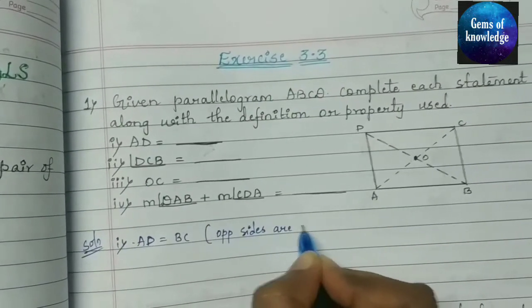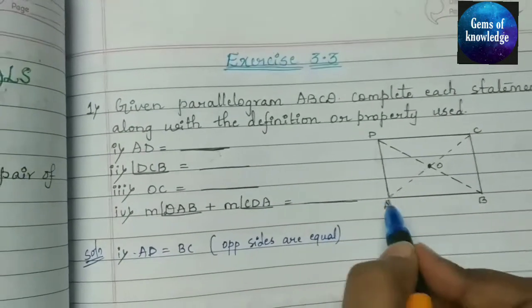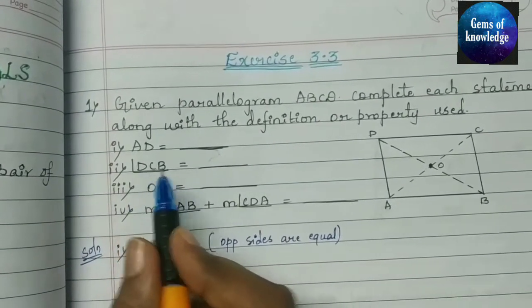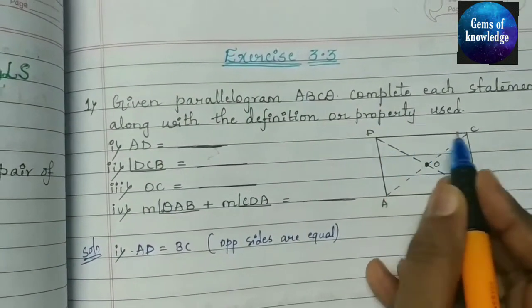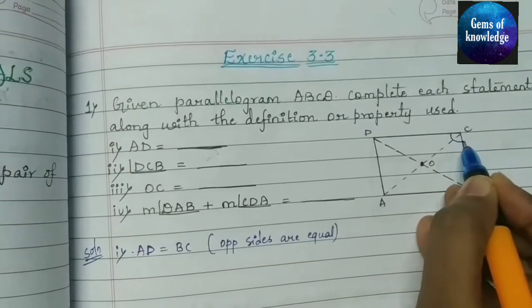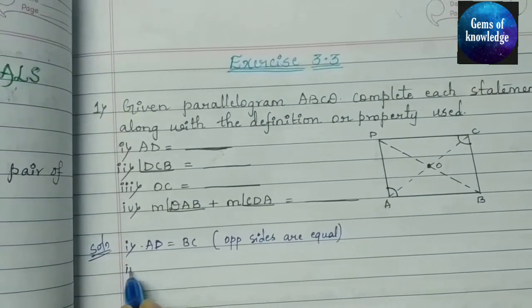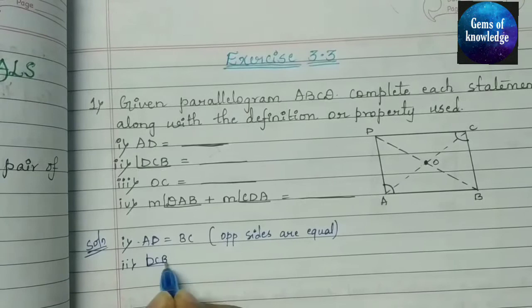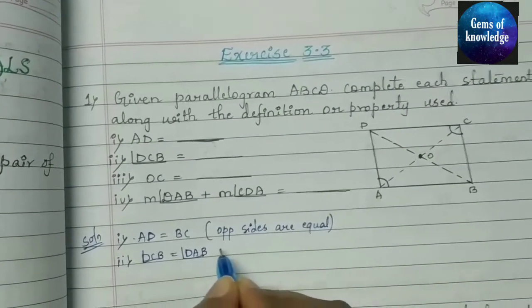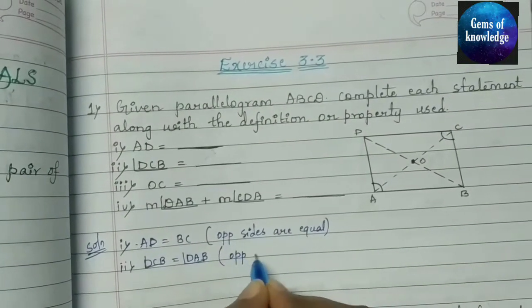The second statement: angle DCB equals angle DAB. These are the opposite angles of the parallelogram. Since the second property states that opposite angles are equal, angle DCB equals angle DAB.